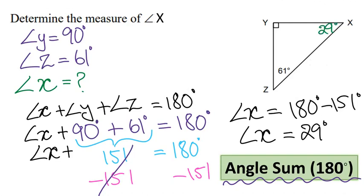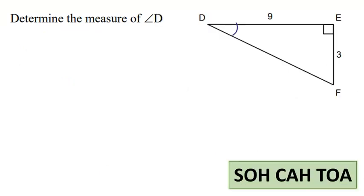Let's do another example. Determine the measure of angle d. Just by looking at this triangle, we can tell that we only have one angle given to us — that is 90 degrees. When we have only one angle given to us, we use trig ratios, so we are going to use SOHCAHTOA.